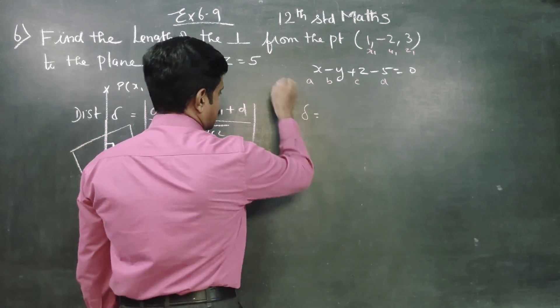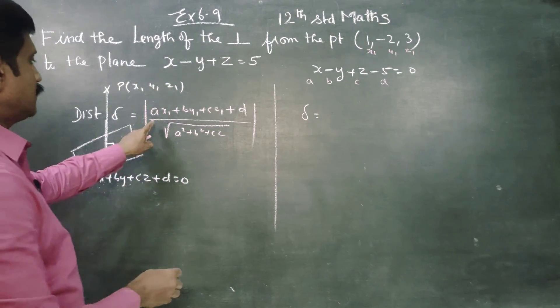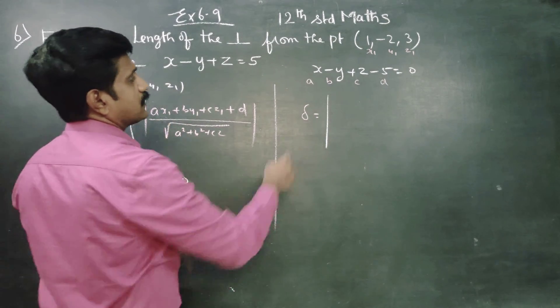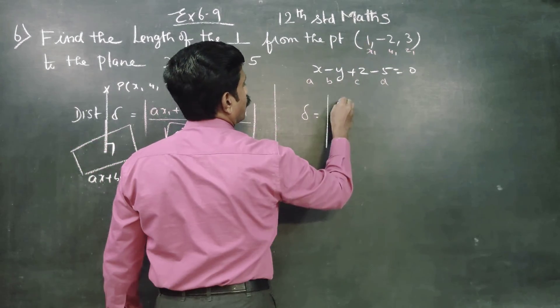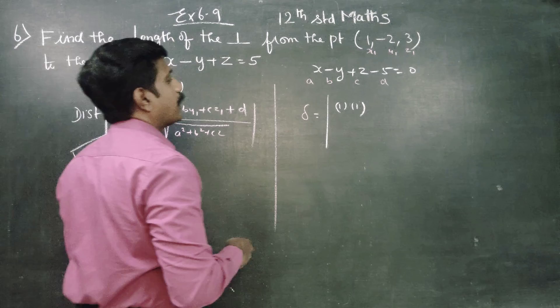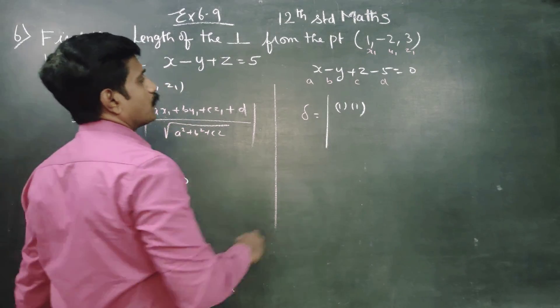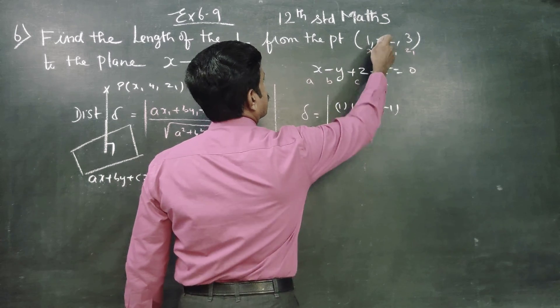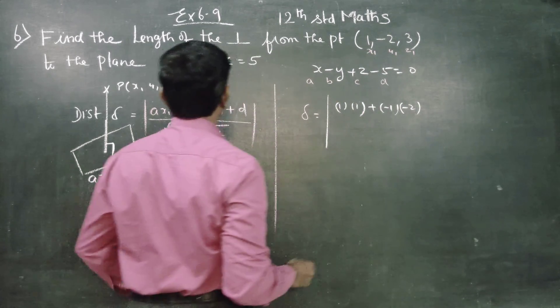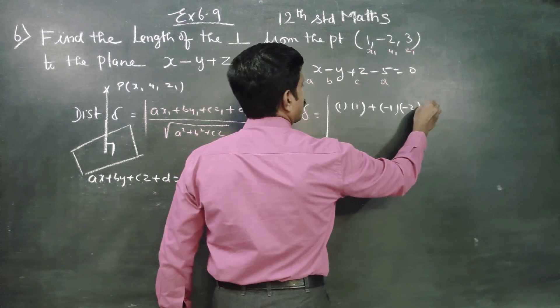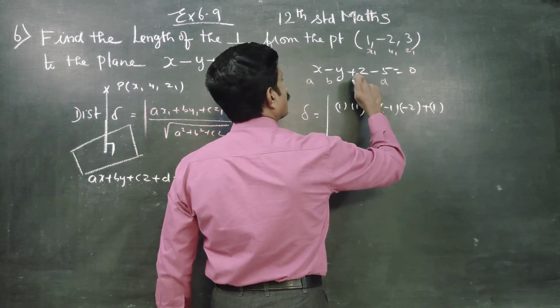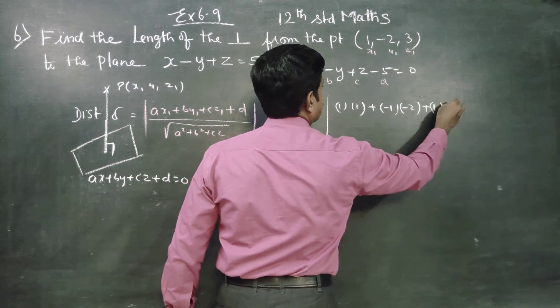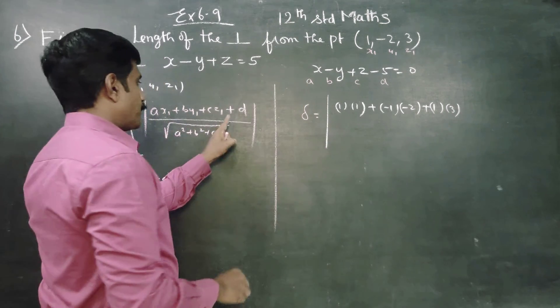Then I am going to find the distance. I am going to substitute. Distance equals (a·x1 + b·y1 + c·z1 + d). a is 1 times 1, plus b·y1, my b is -1, -1 times y1 is -2. c is 1, coefficient is 3, plus d.